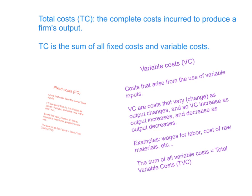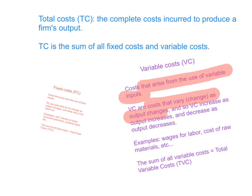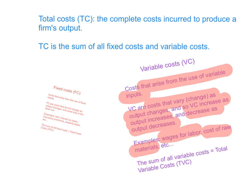Variable costs, on the other hand, are the costs that arise from the use of variable inputs. These are the costs that vary — the costs that change as output changes. Variable costs will increase as output increases and decrease as output decreases. How much you pay in variable costs will depend on how much you produce, and if your production level is zero, your variable costs will also be zero.